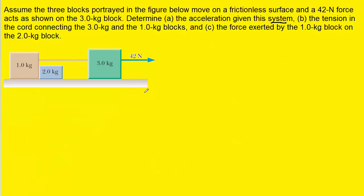Now that we know the acceleration of the system, we can move on to Part B, which asks for the tension in the chord connecting the three and one kilogram blocks. One way of finding that tension is to draw a free body diagram for the forces acting on the three kilogram block. On the three kilogram block, we have the 42 Newtons pulling it to the right, and then we have the tension force resulting from the chord connected to the block, pulling against it to the left, labeled T.